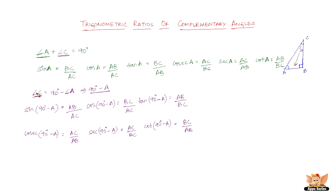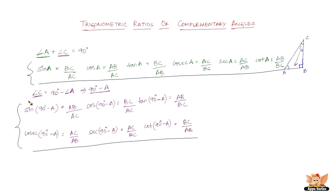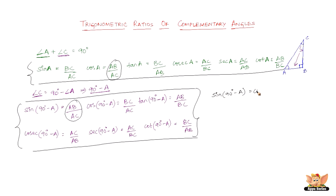Now let's compare these two groups. AB over AC appears as cos A in angle A's ratios, and as sine of (90 degrees minus A) in angle C's ratios — so sine of (90 degrees minus A) equals cosine A. BC over AC shows that cos of (90 degrees minus A) equals sine A. And AB over BC shows that tan of (90 degrees minus A) equals cot A.